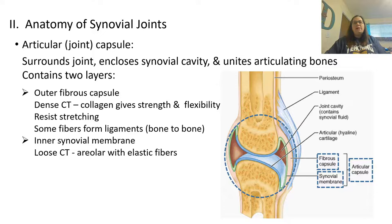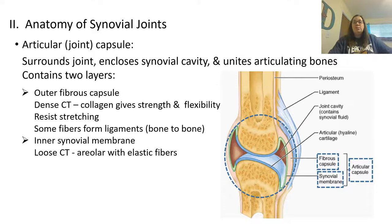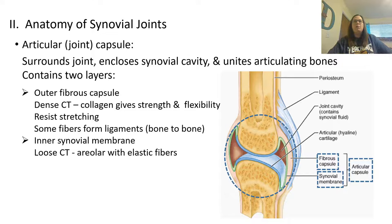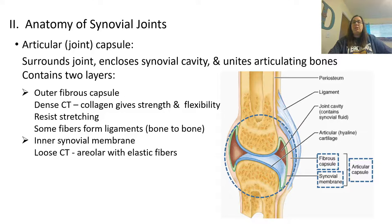The second part is the anatomy of the synovial joint. Because it is more complex with a cavity, there are more structures to examine. The articular or joint capsule surrounds the joint, encloses the synovial cavity, and unites the two articulating bones. Like serous membranes, it is a two-membrane system. The outer fibrous capsule is made of dense connective tissue — collagen gives it strength and flexibility to resist stretching so the joint stays intact — and some fibers form ligaments connecting bone to bone. The inner synovial membrane is made of loose areolar connective tissue with more elastic fibers, giving the inner part more flexibility during movement.